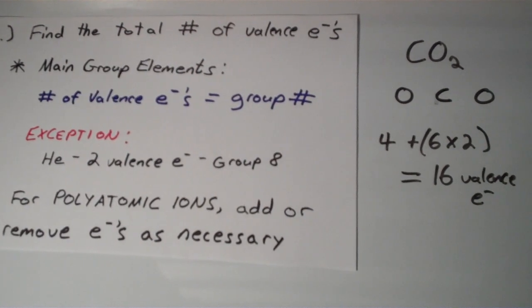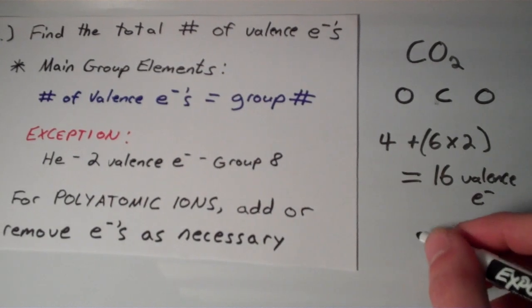And if you want, you can divide this number by 2, and that gives you the number of electron pairs. So 16 divided by 2, that would be 8 electron pairs.